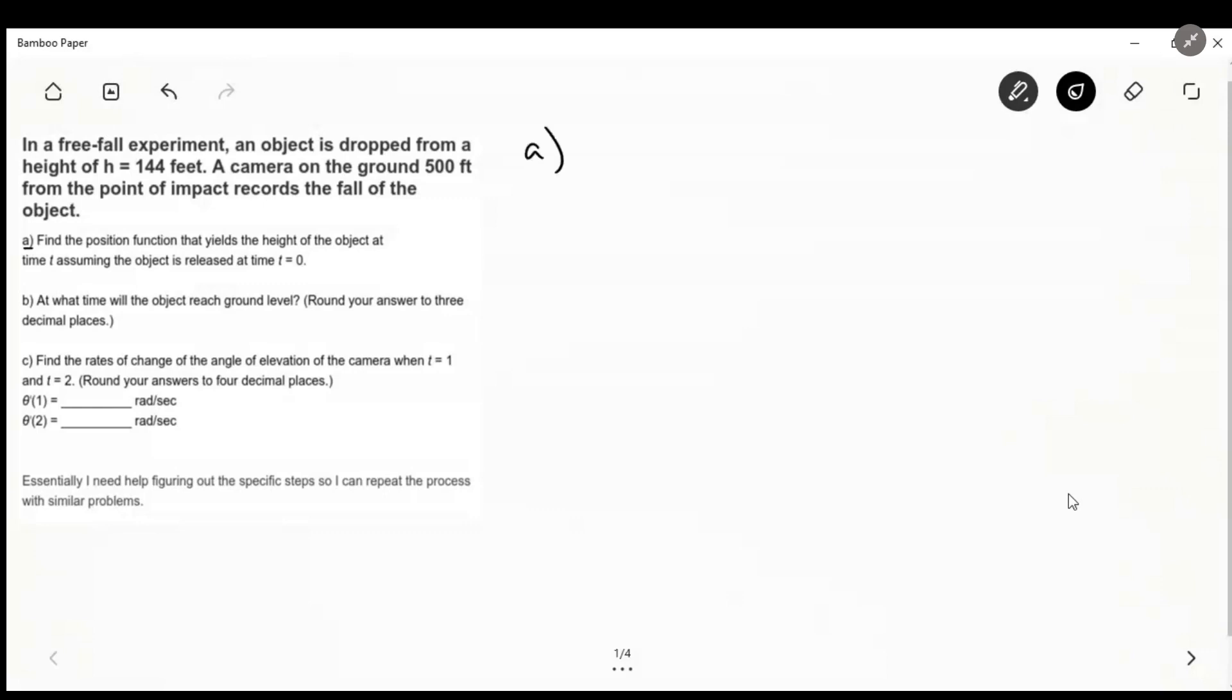So there's a generic equation for that that just says h of t equals minus 16 t squared plus our initial velocity times t plus h, which is our initial height.